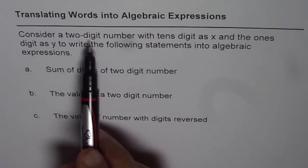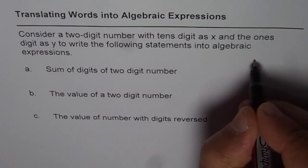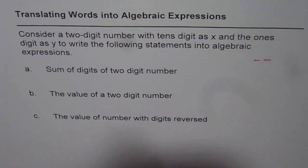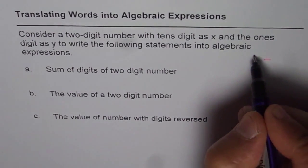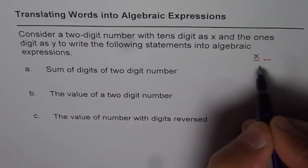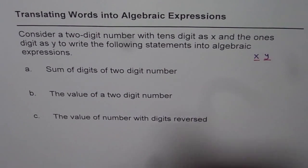When we say two-digit number, that means the number has two digits. The tens digit is x, that means this is tens and that is ones, ones is y, so that is your number.